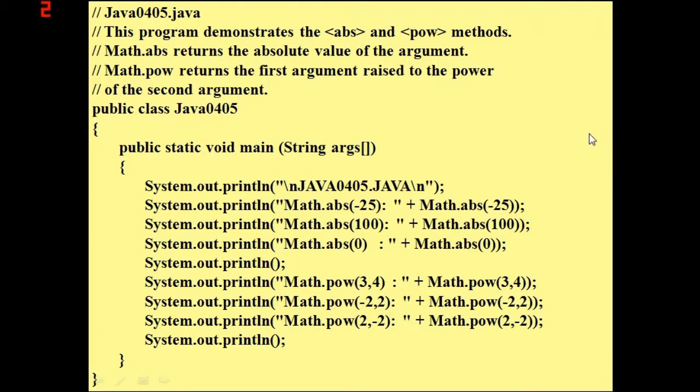Math.pow returns the first argument raised to the power of the second argument. So with Math.pow(3, 4) it's going to take 3 and go to the fourth power, so it's going to be 3 times 3 which is 9, times 3 which is 27, times 3 which is 81 I think.